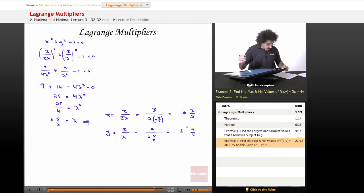Basically our points that we're going to pick are 3 fifths and 4 fifths, that's one possibility. And minus 3 fifths and minus 4 fifths, that's the other possibility. Let's just call this p1 and let's call this p2.